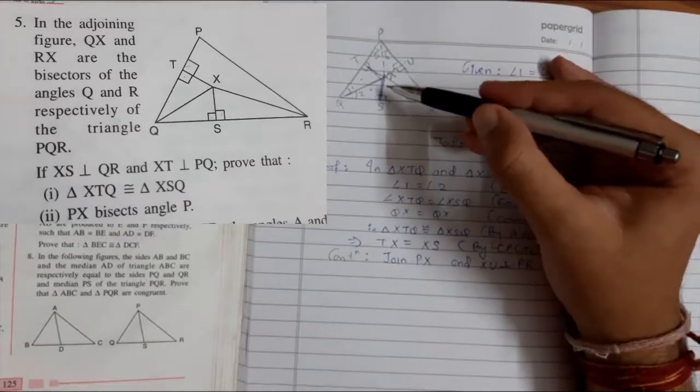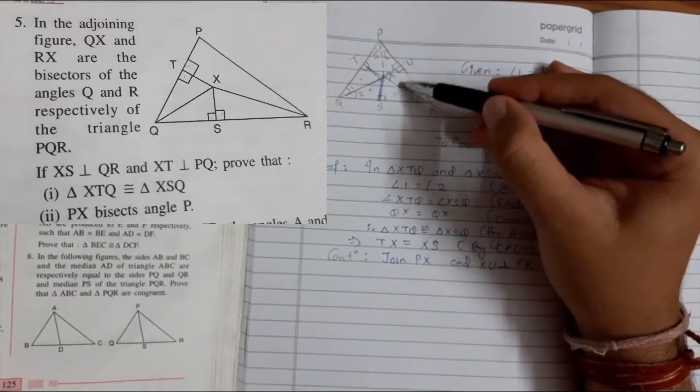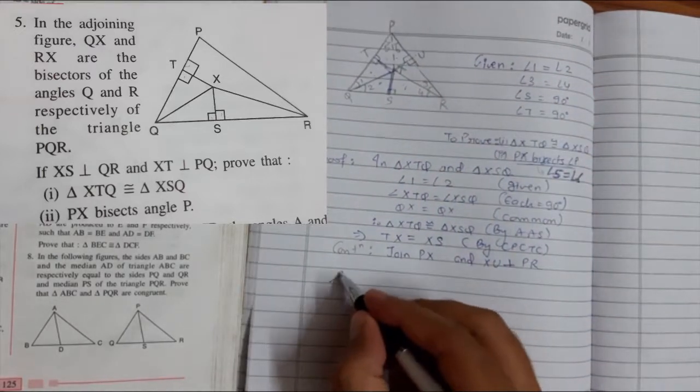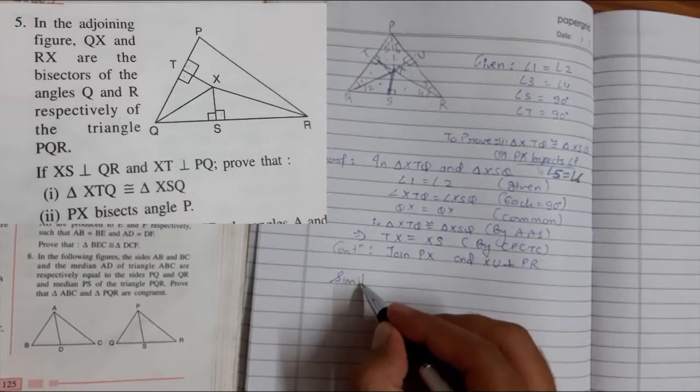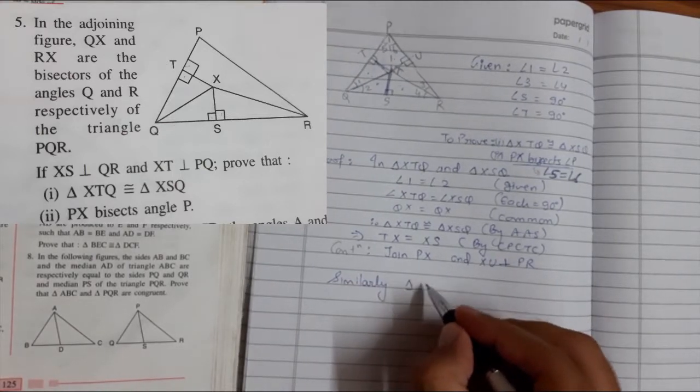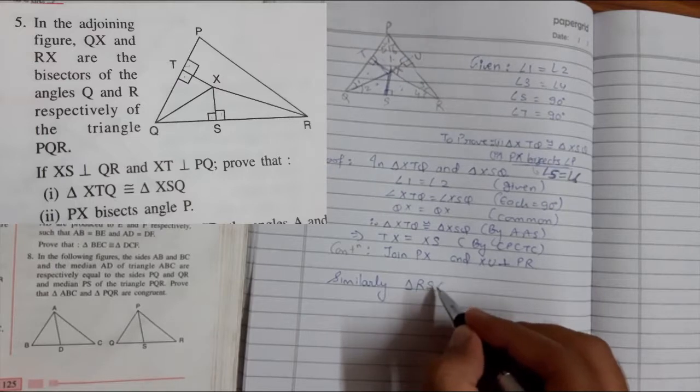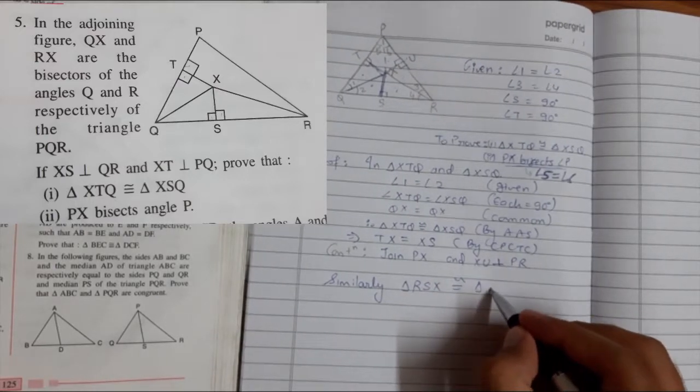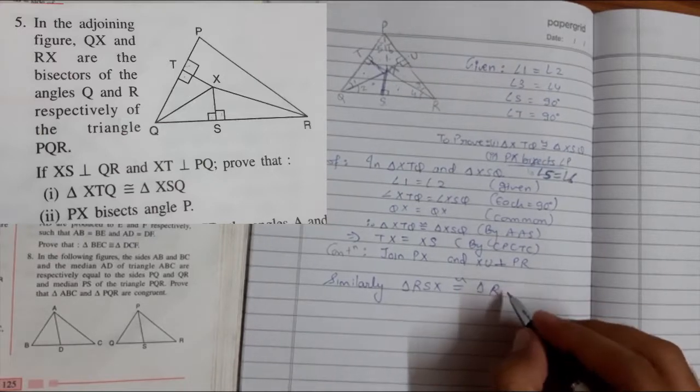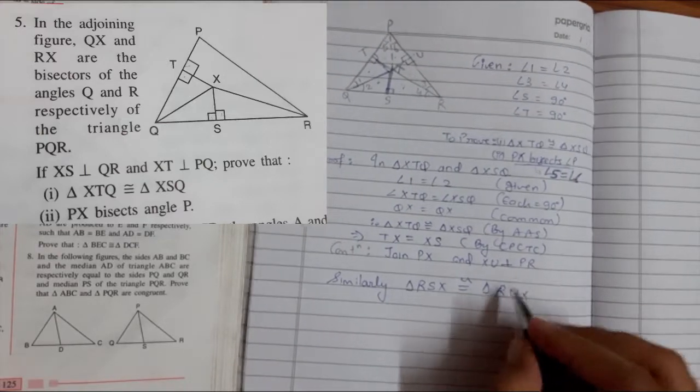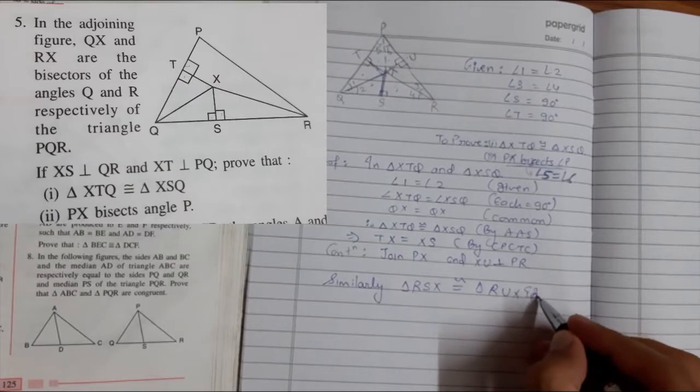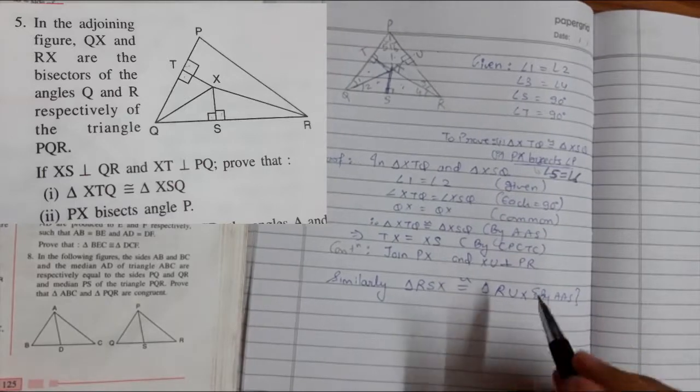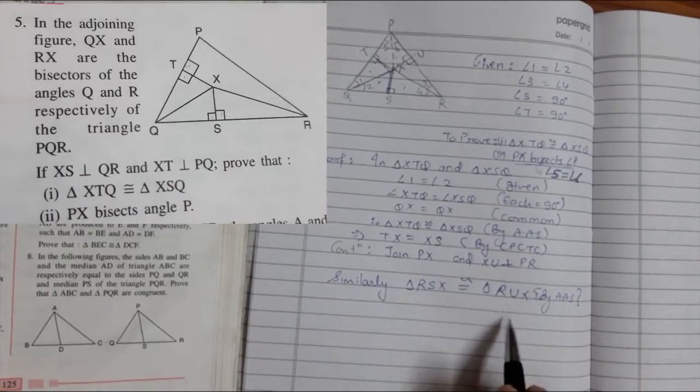Now if we focus on this thing, if we prove these two triangles, this will be also equal to this. So can I write similarly, triangle RSX is congruent to triangle RUX by AAS, just like the previous one.